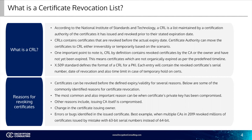What are some of the most common reasons a certificate can be revoked before its expiration date? They can be revoked before the defined expiration for several reasons. The most common and also most important reason can be when a certificate's private key has been compromised. Other reasons include the CA itself being compromised, a change in the certificate issuing owner, or errors or bugs found in the issued certificate. A best example of this was in 2019, when multiple CAs were revoking millions of certificates issued by mistake with a 63-bit serial number for each instead of a 64-bit.